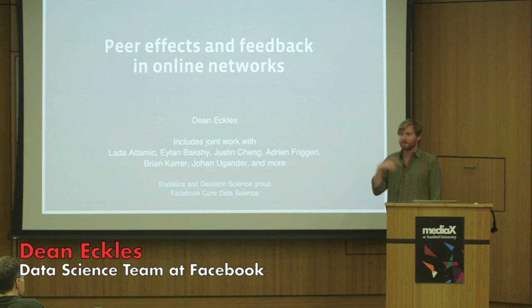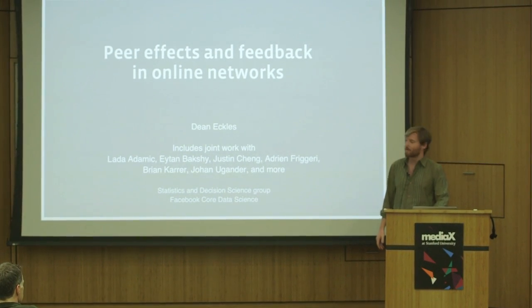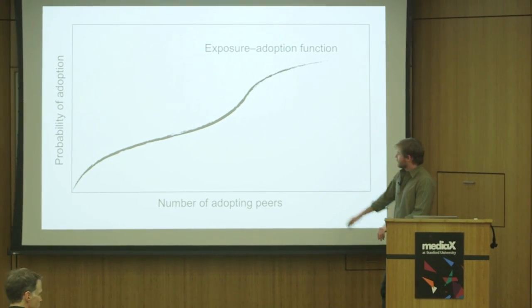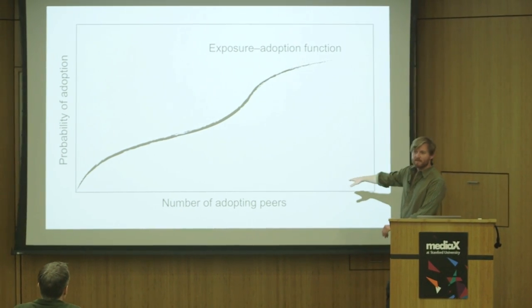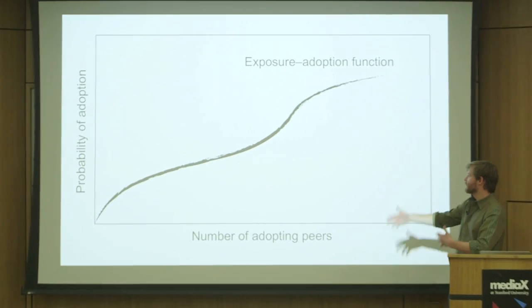I'm going to cover a lot of material in a short time, but hopefully it'll be provocative and interesting. A lot of what I care about are functions where we have some number of somebody's peers who choose to engage in some behavior, and then as a function of that, somebody decides whether or not to engage in maybe that same behavior.